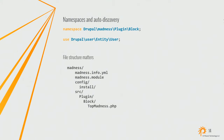In Drupal, namespaces also tell Drupal where to find code. For example, a namespace declaring that a Drupal module called 'madness' has a plugin of type 'block' named TopMadness tells Drupal the class lives in a PHP file of the same name. When you add a new module, Drupal scans the source directory, categorizes class files, parses namespaces, and tells the autoloader where everything is. In your class, you reference other classes using a use statement — for instance, use Drupal\User\Entity\User.